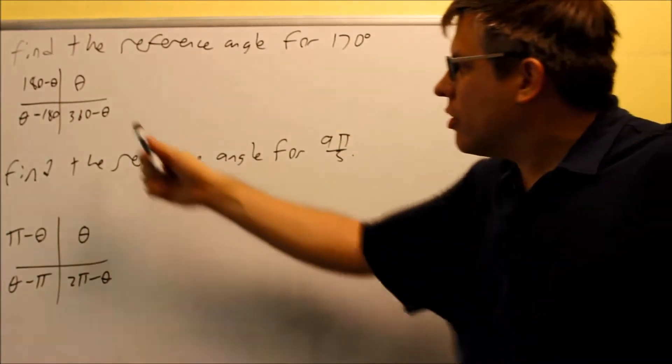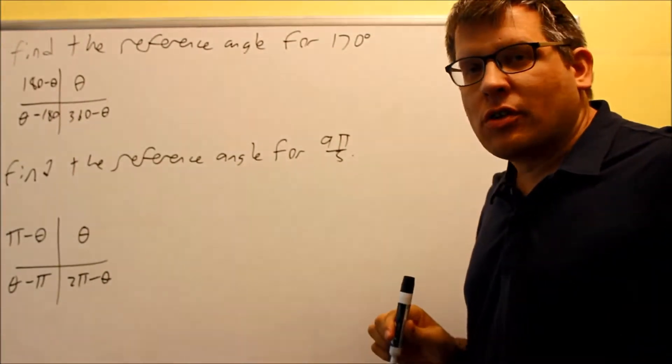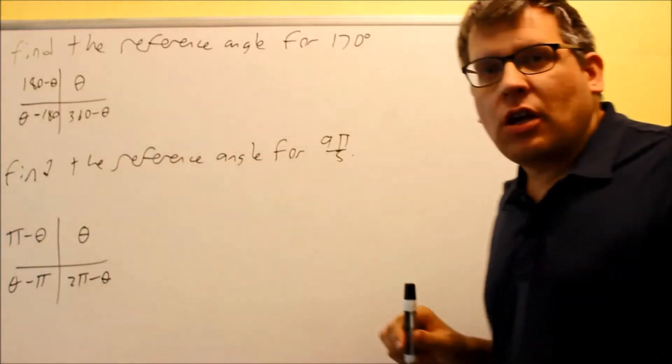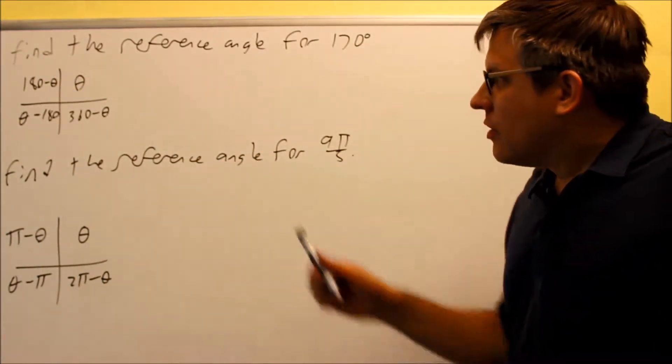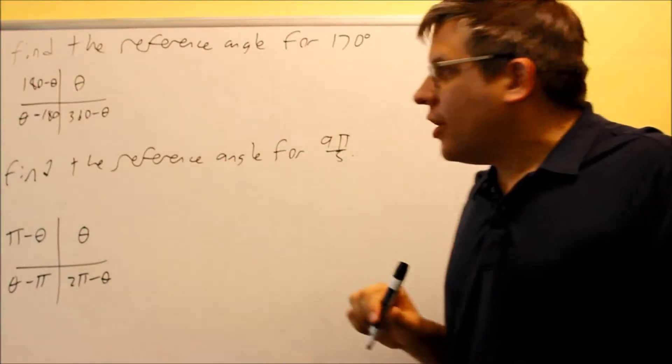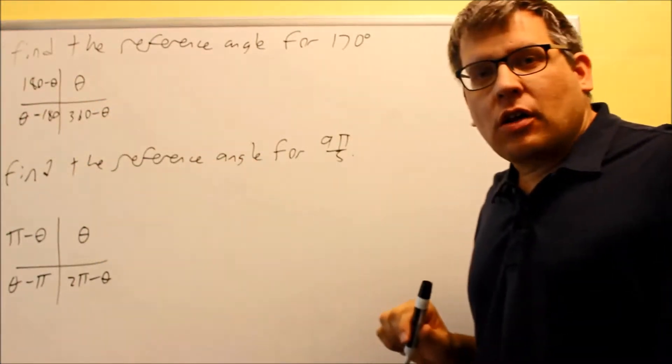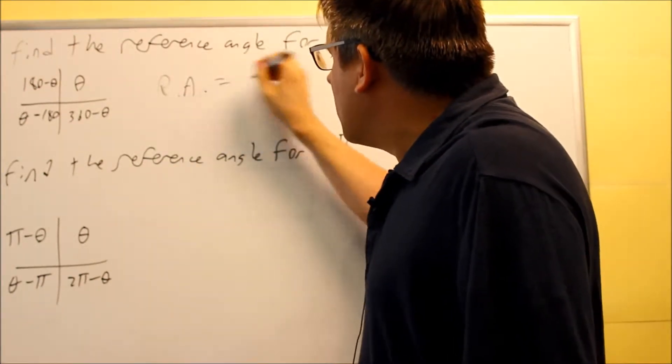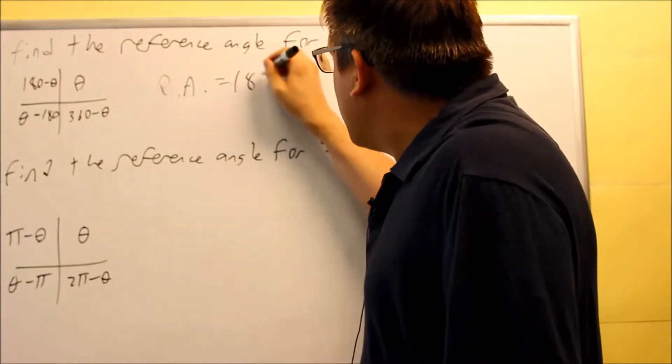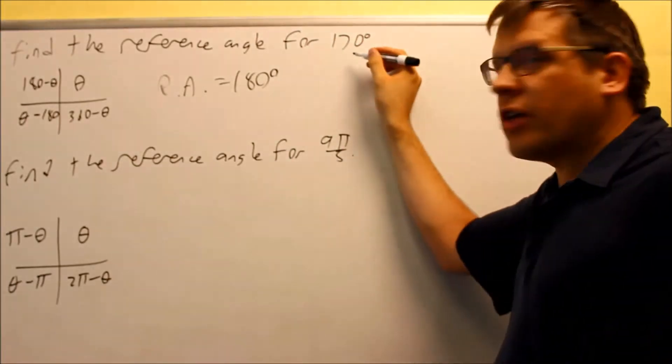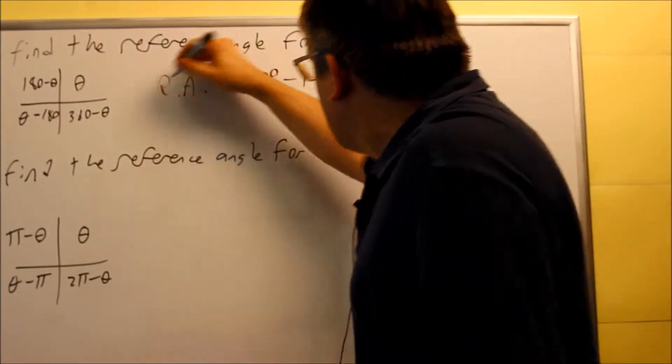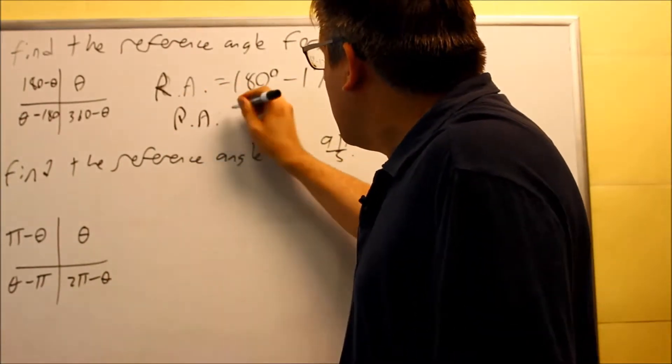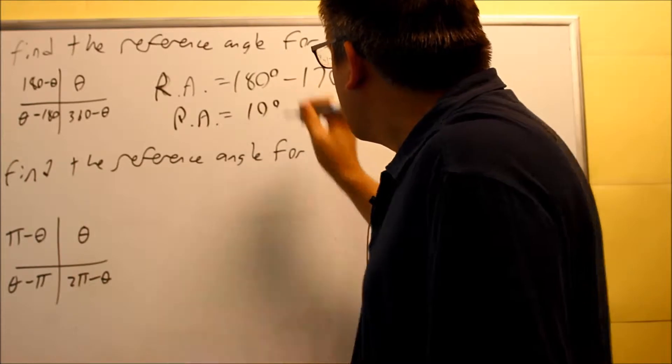So 170, what you want to do first is see which quadrant 170 is in. 170 is between 90 and 180, which means that's going to be in the second quadrant. So because the angle is drawn there, I know that I've got to use the 180 minus theta as my reference angle formula. So here's what I'll do. I'll do RA, reference angle, is equal to 180 minus the original angle that they gave us, that's minus 170. And so when you do that, your reference angle is going to equal 10 degrees.